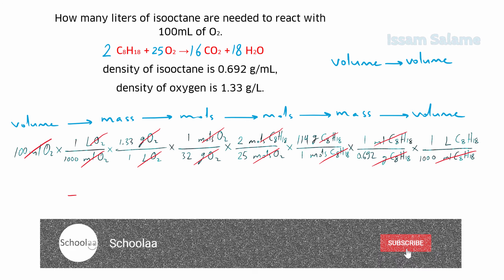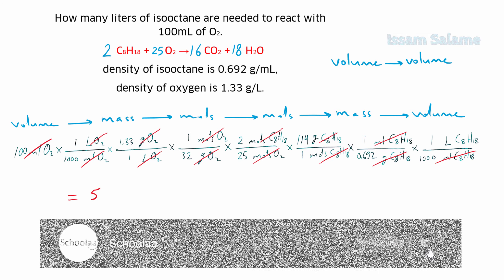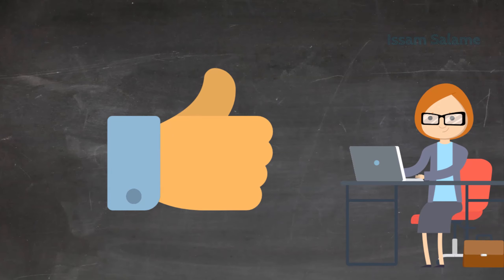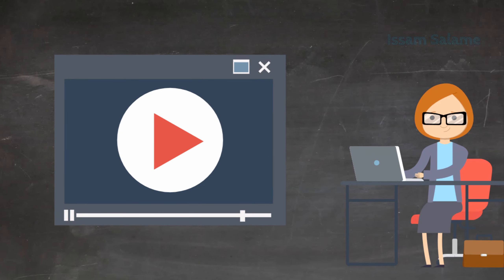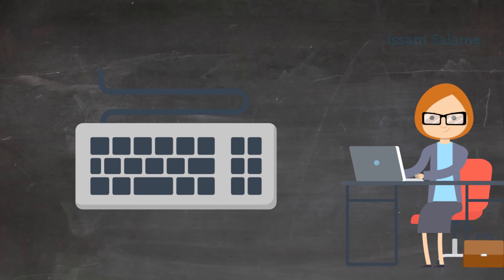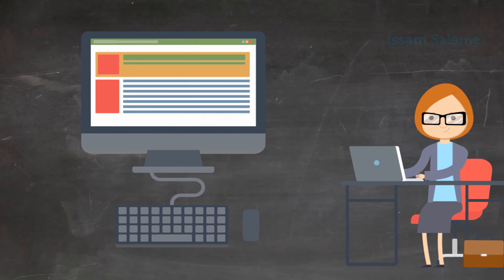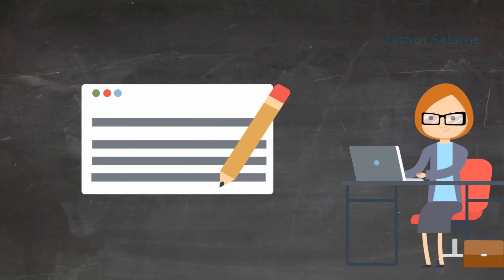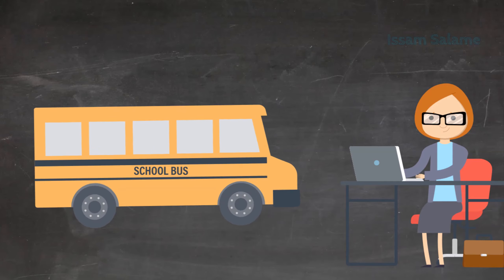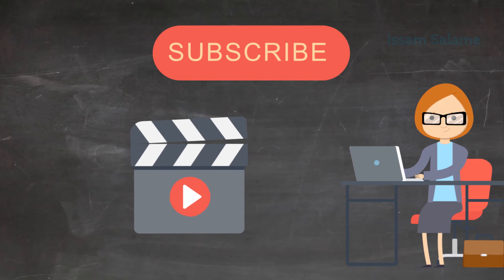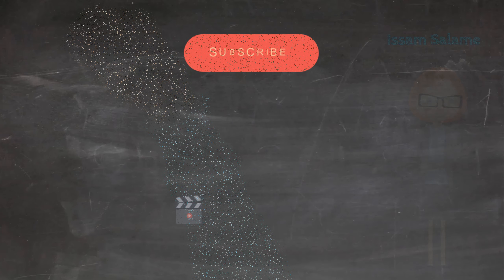We cross out all similar units between numerators and denominators, multiply all numerators together, and divide by the denominators. The final answer is 5.5 × 10⁻⁵ liters of isooctane. Now you are ready to solve the end-of-video questions. Put your answers in the comments section, and if you have any questions, share them with me. Share this video with your friends and subscribe to the channel for more videos — good luck!